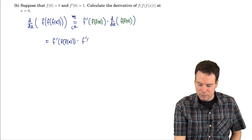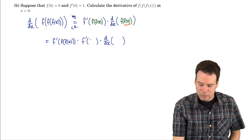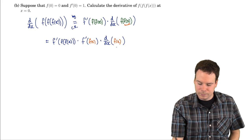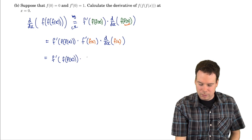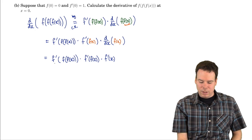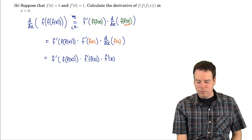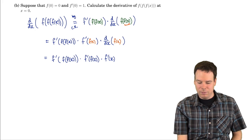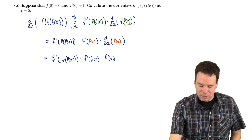That's the derivative of the outside function evaluated at the inside function, times the derivative of the inside function — so this is the chain rule again. In this case, the inside function is f(x) and the outside function is the other f. So this is f'(f(f(x))) times f'(f(x)) times f'(x). The derivative of the composition of f with itself three times is: derivative of the outermost evaluated at the inner two, times derivative of the middle f evaluated at the innermost, times the derivative of the innermost function — the chain rule applied twice.